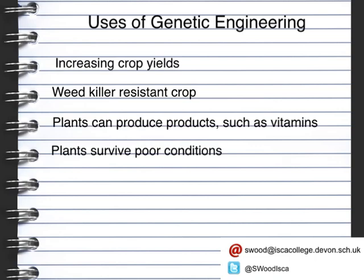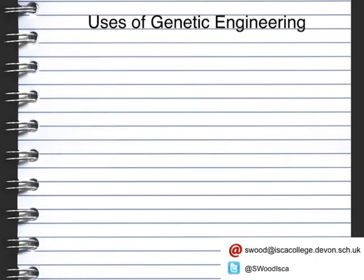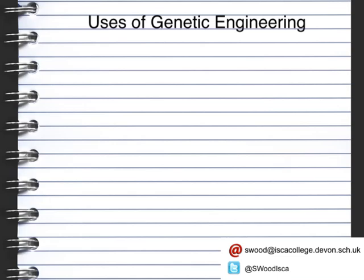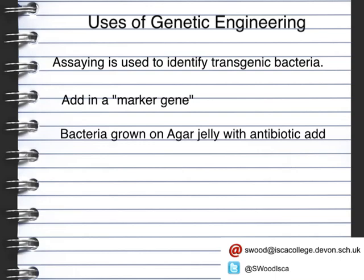Not all bacteria can be used to help produce insulin. Scientists use a technique known as assaying to identify transgenic bacteria. They do this by adding a marker gene so that they can identify where the gene is. The marker gene might be an antibiotic resistant gene. The bacteria are then grown on an agar jelly that has the antibiotic added to it. The transgenic bacteria can then be identified because they will be able to grow and survive in those conditions.